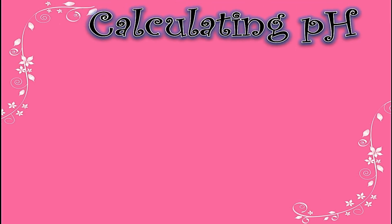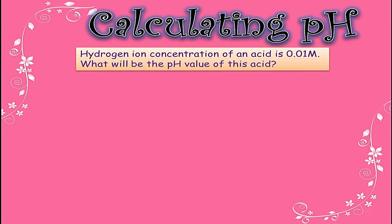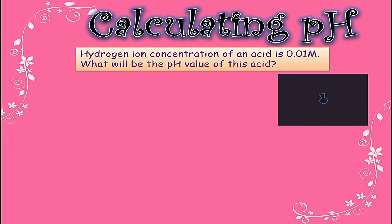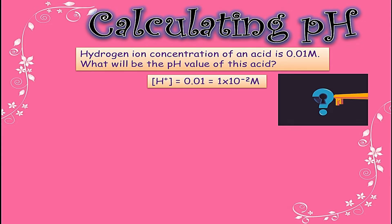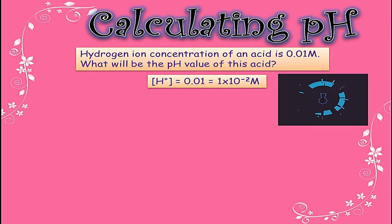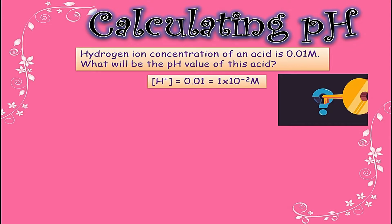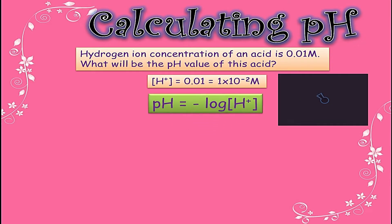Now I'll tell you how to calculate pH. For example, a question is given to you: the hydrogen ion concentration of an acid is 0.01 molar. What will be the pH value of this acid? First of all, you have to convert the molarity or concentration of hydrogen ion into exponential value. So 0.01 becomes 1 × 10⁻² M. M is the unit for molarity or concentration. So for calculating pH we will use the formula.